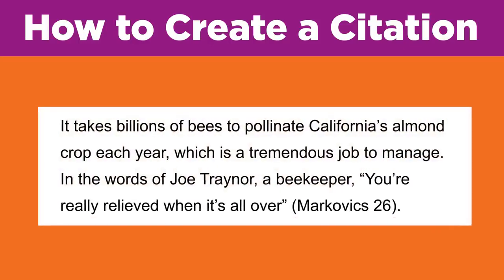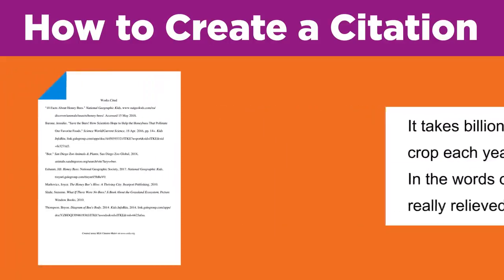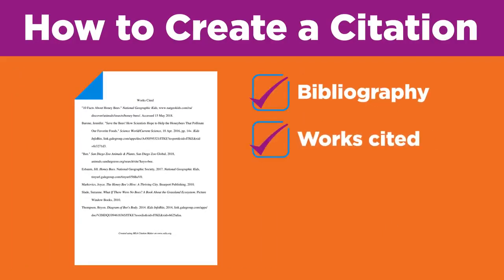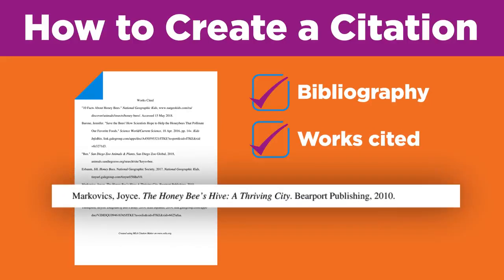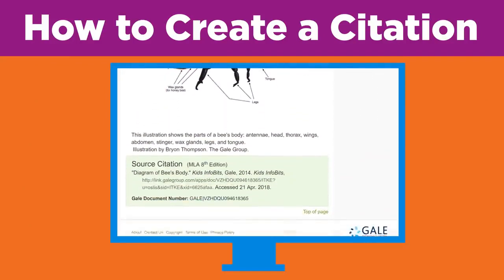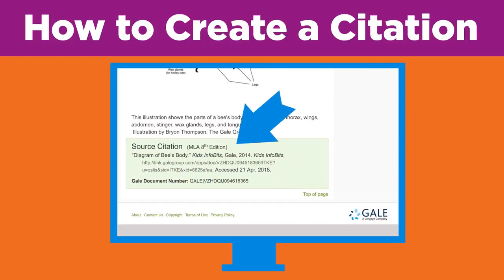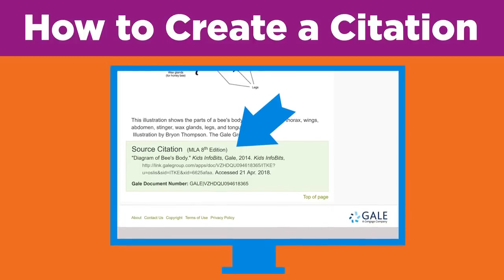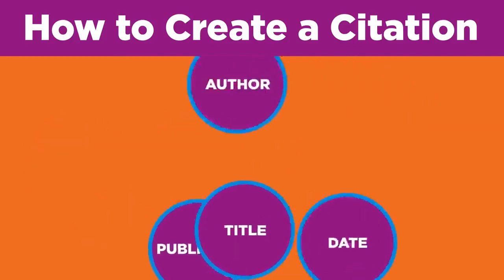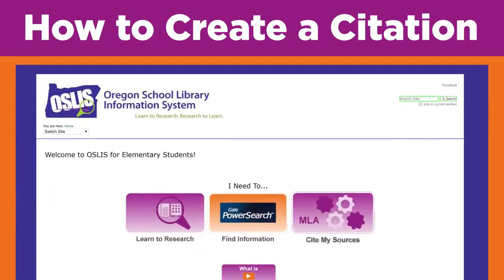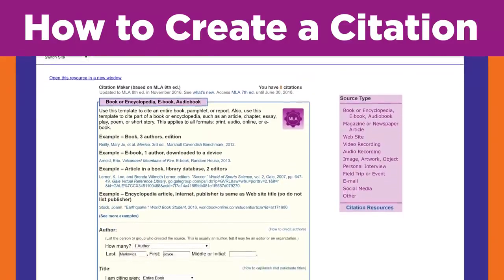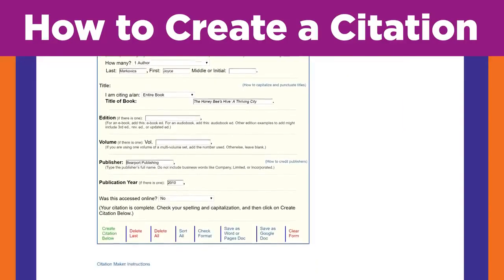For any research project, you must always include an alphabetized list of all of the sources you used. This list is called a bibliography or works cited, and it provides complete information for each source. Sometimes you may find a citation at the end of an article in a library database or online encyclopedia, but most of the time you'll need to make your own citations. There are rules for creating proper citations, like what source details must be included and what order to put them in. Citation Maker on OSLIS will help you create your citations and your works cited list — that way you don't have to memorize the complicated rules. Citation Maker makes it easy.